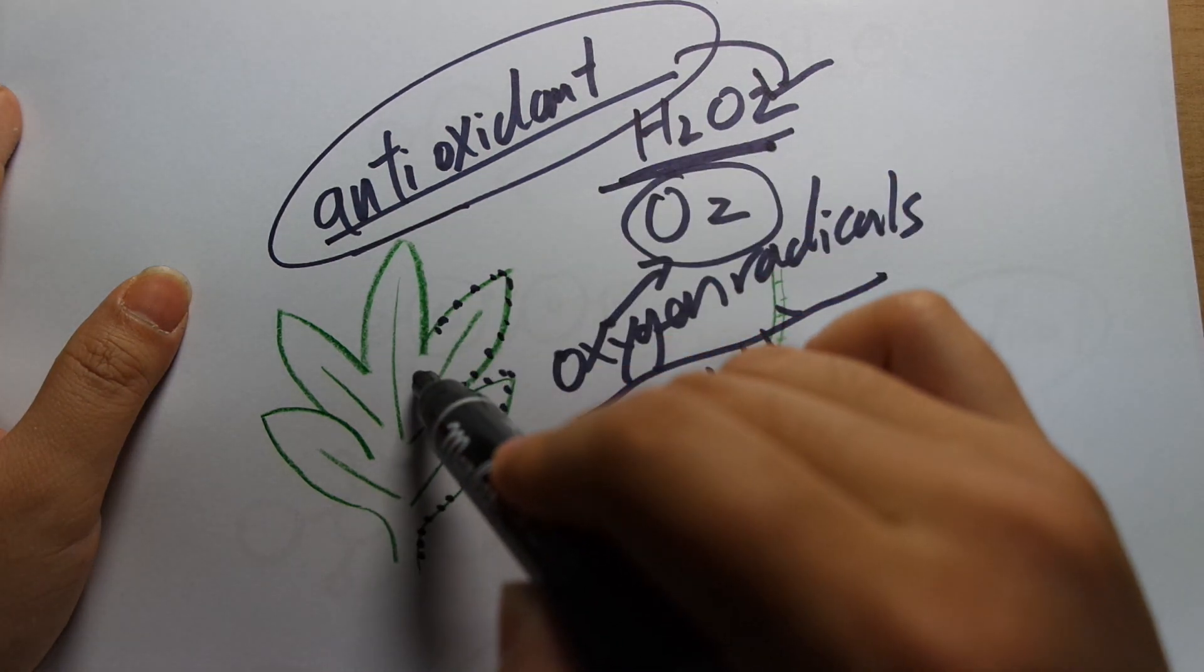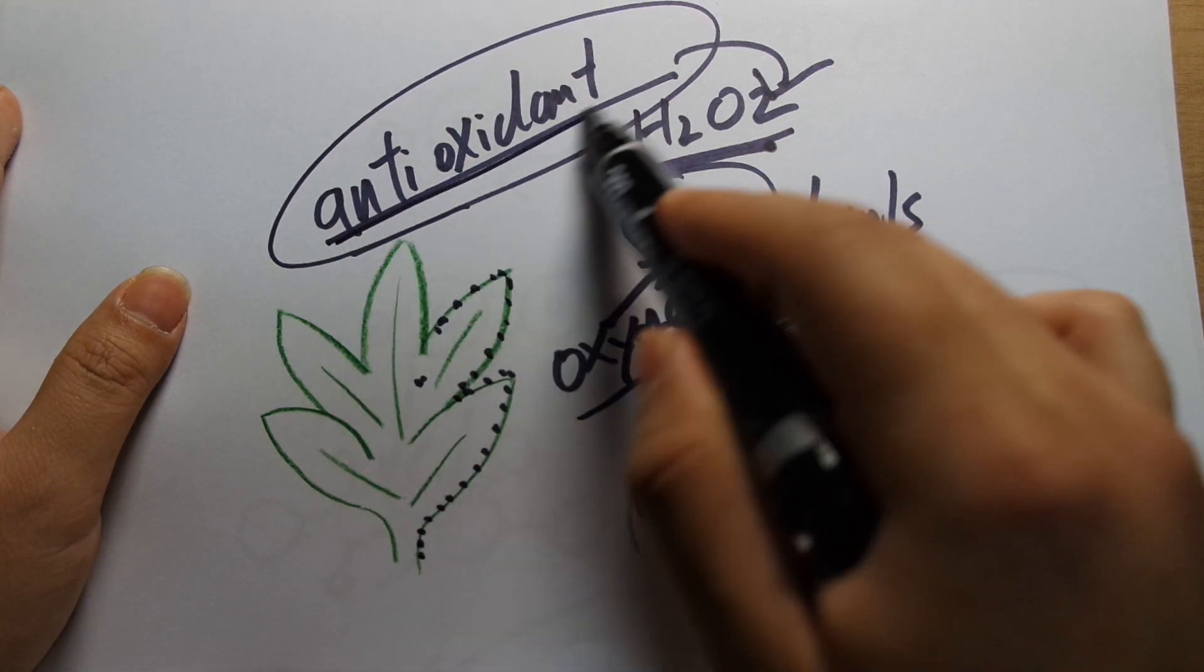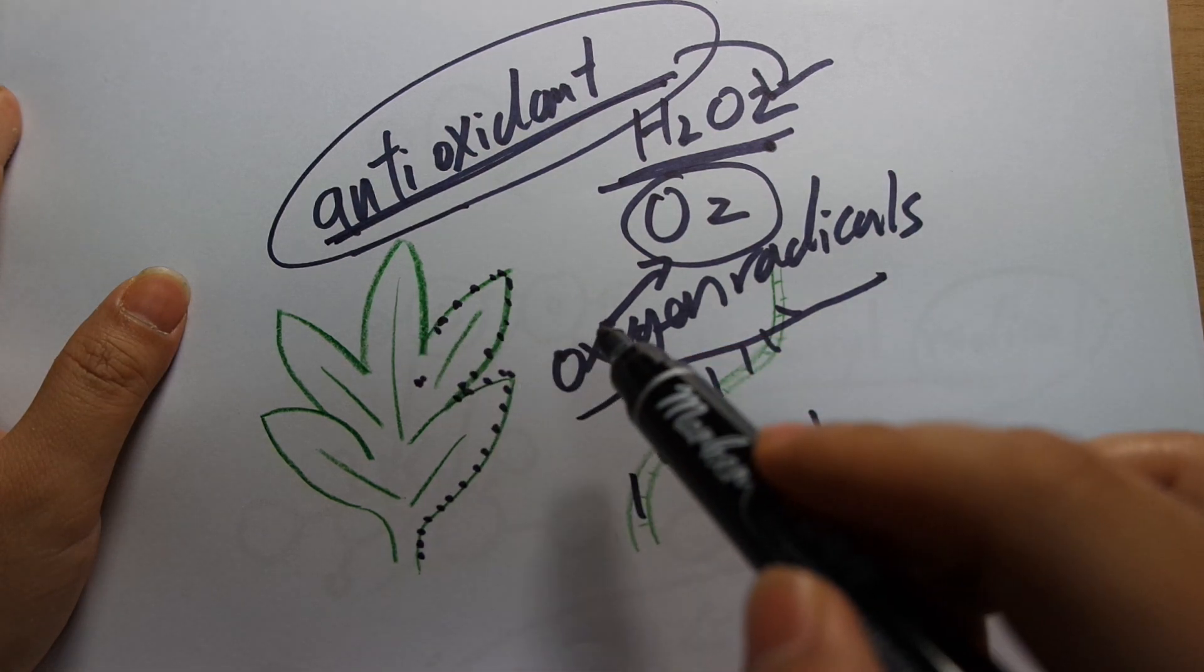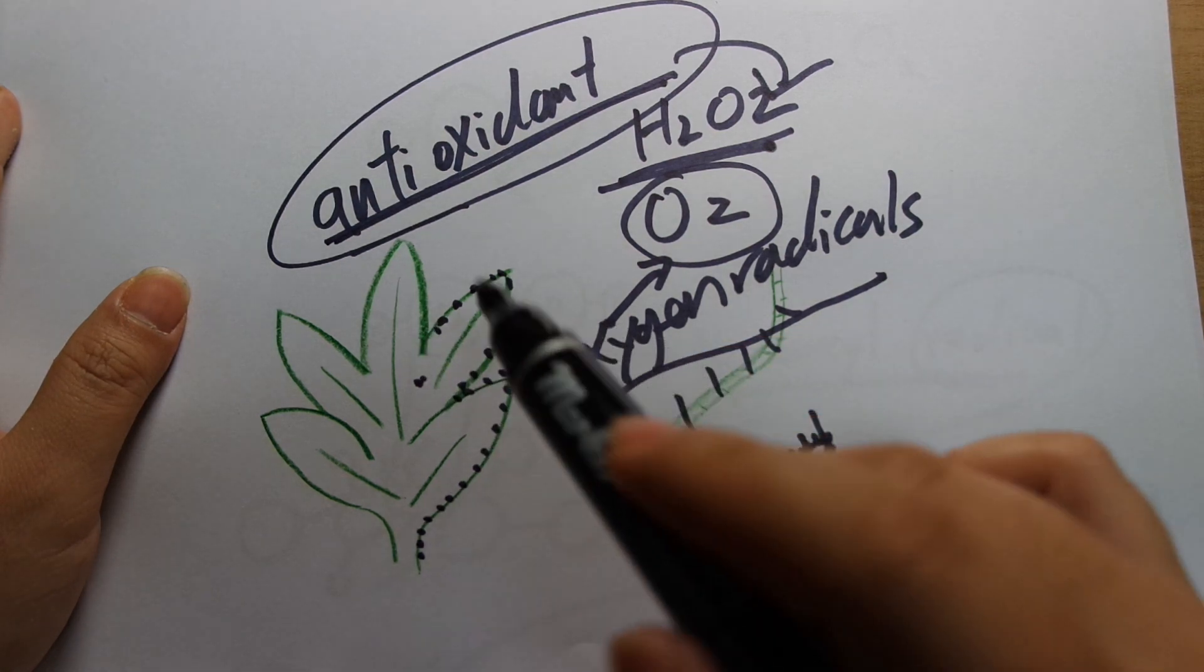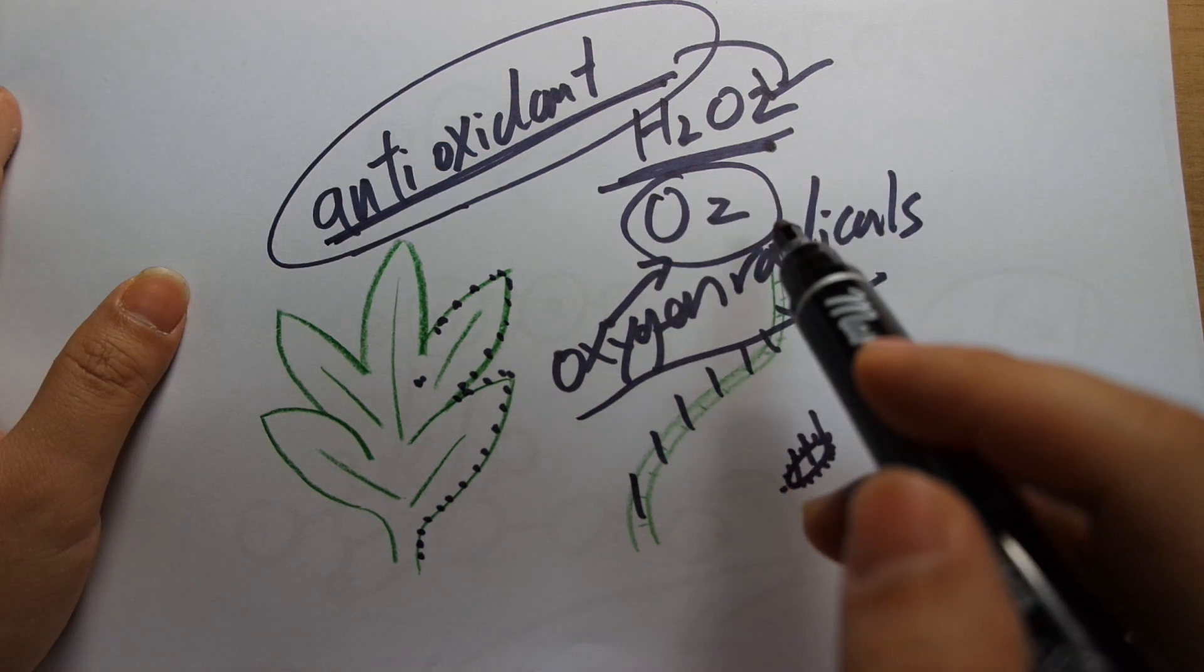And complex organisms like plants and fish tend to have more of these antioxidants to combat that oxidative stress. So basically, H2O2 is more toxic towards simpler and smaller organisms. And that is why.